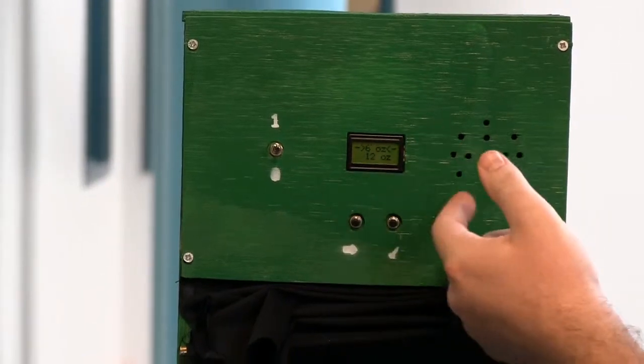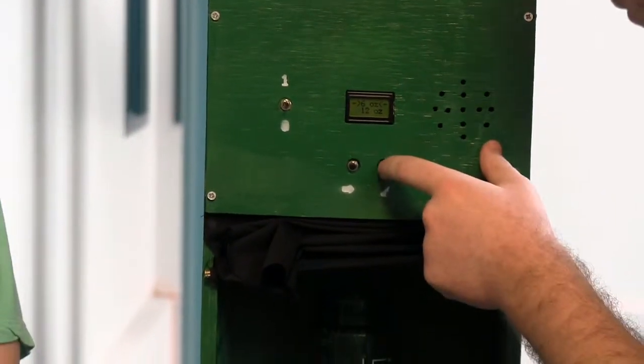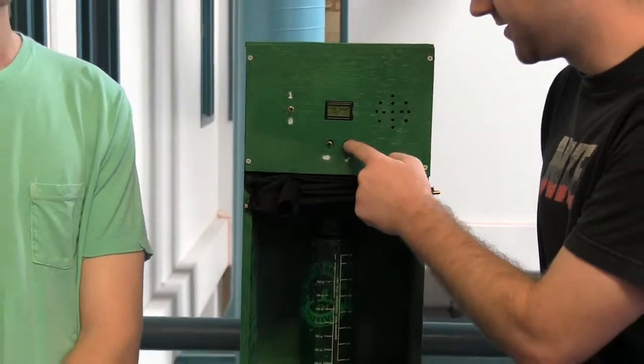When you get to 24, push it again and go back to 6. Then the selected volume you push this little check button.